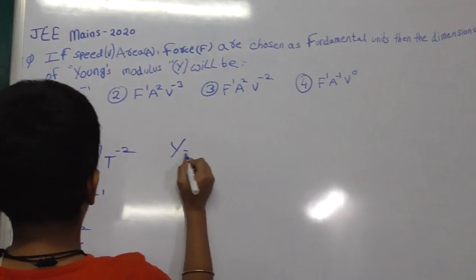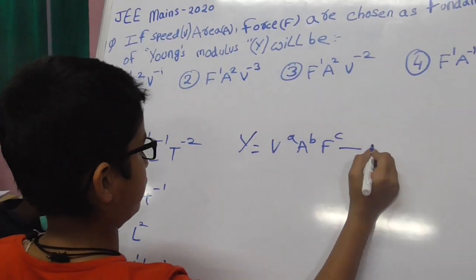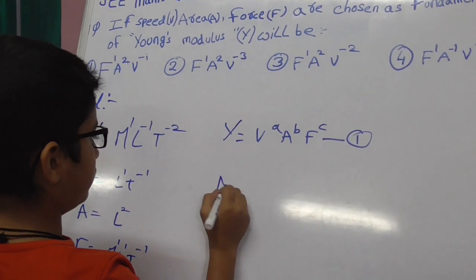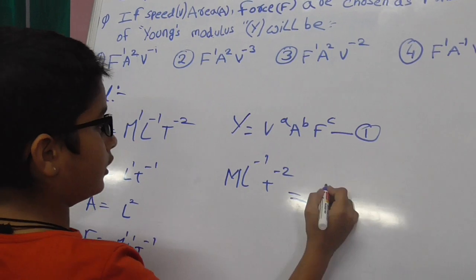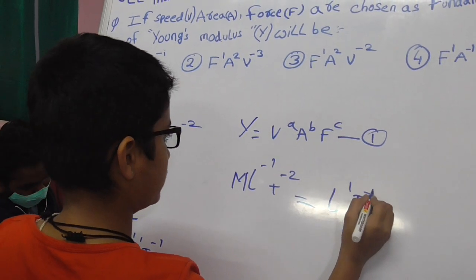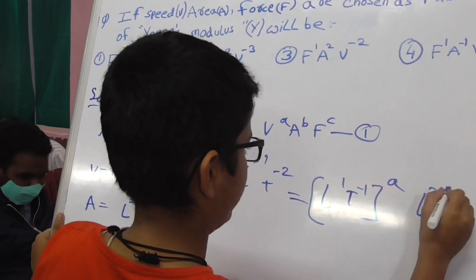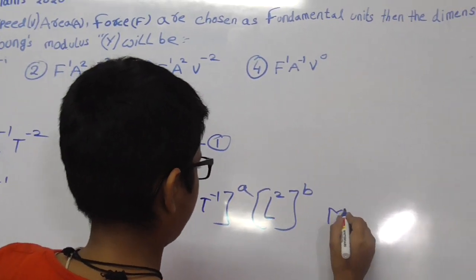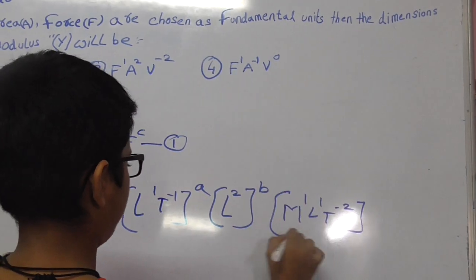So now Y is equal to V power A, A power B, and F power C — which is equation 1. Substituting: M L power minus 1, T power minus 2 is equal to L power 1, T power minus 1, whole power A, into L squared whole power B, into F power C.